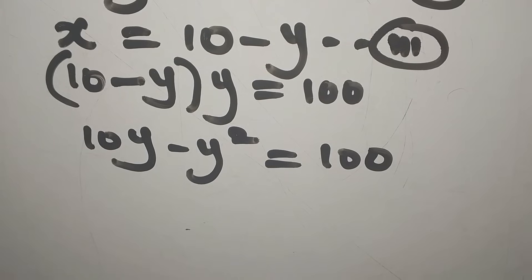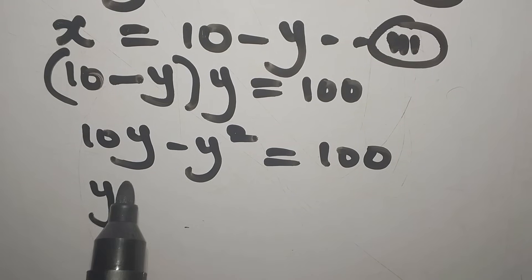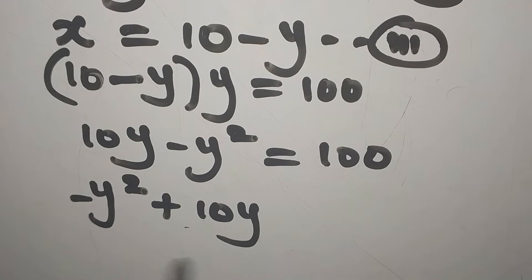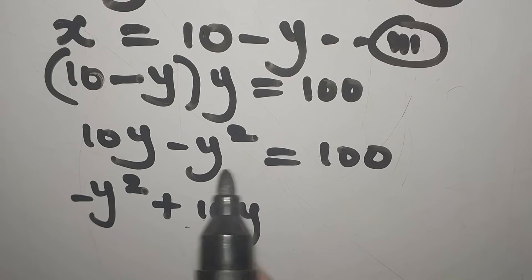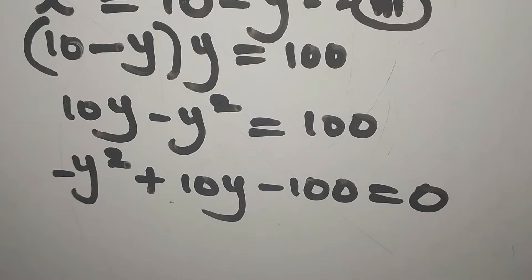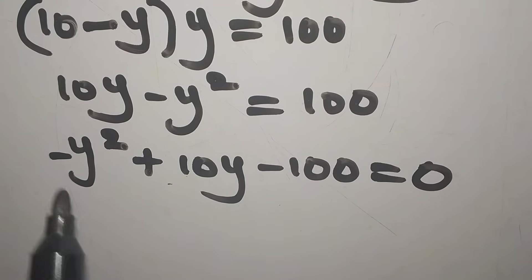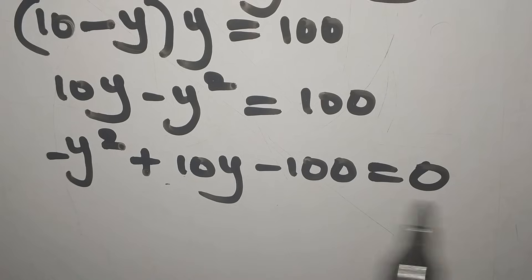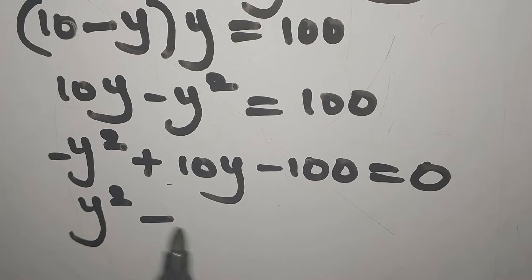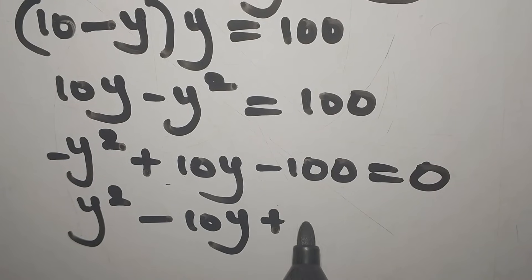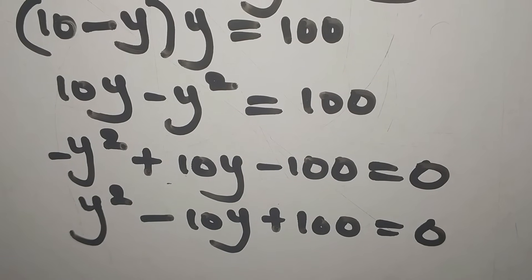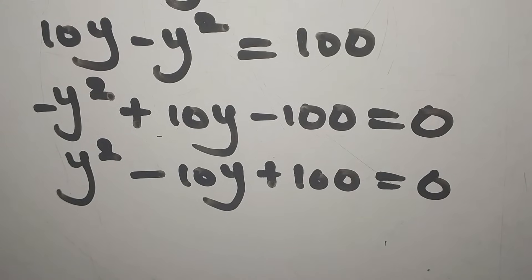Now let's write with the highest power first: that is negative y squared, plus 10y, minus 100, all equal to zero. We want to remove the negative sign, so we multiply everything by negative 1, giving us y squared minus 10y plus 100 equals zero.